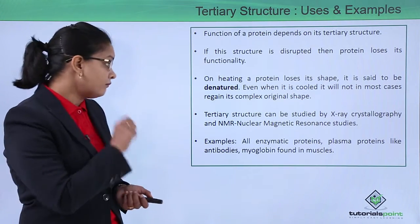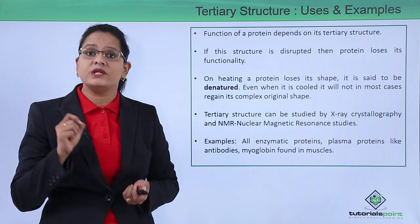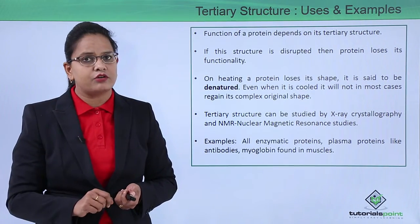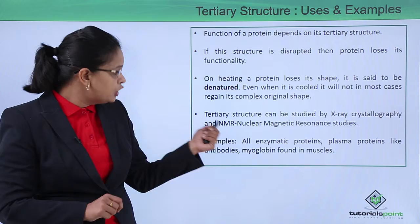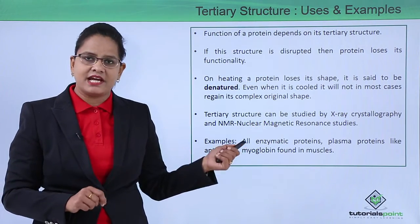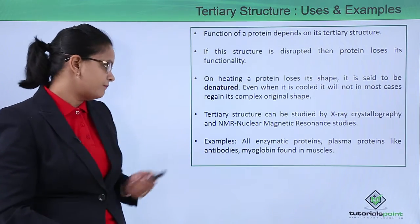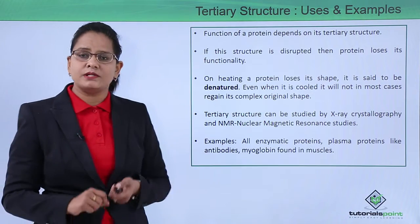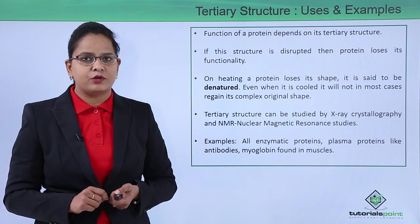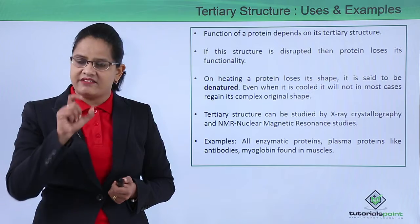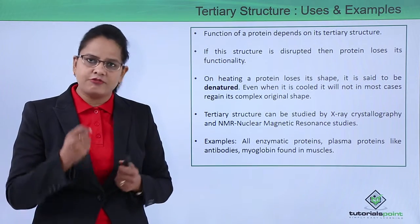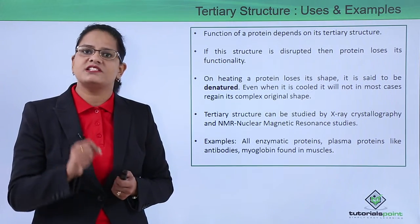The tertiary structure can be studied by X-ray crystallography and nuclear magnetic resonance — details about these techniques will be studied in higher classes. Examples of tertiary proteins include all enzymatic proteins; all types of enzymes have an active site formed by three-dimensional folding, making them tertiary structures.